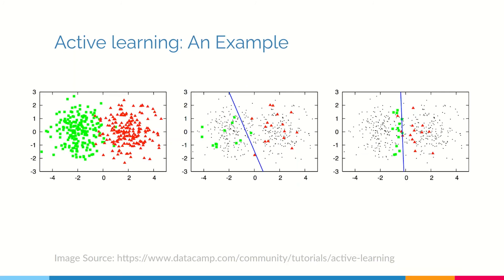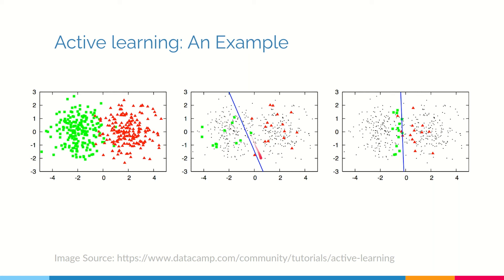Let us now look at an example for active learning. This is the dataset given to us — there are many green points and red points. However, we do not know any of the labels; we know all the points, but none of their labels. If we randomly label some of the points, we may end up with a situation where the labeled ones shown in green and red are scattered and all the smaller dots remain unlabeled.